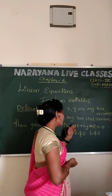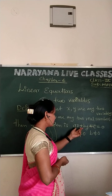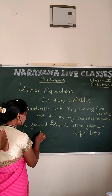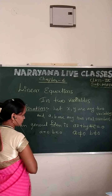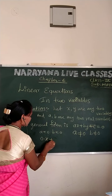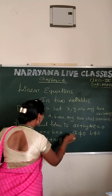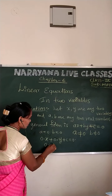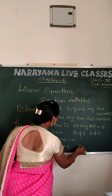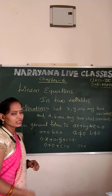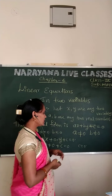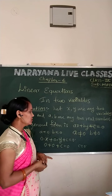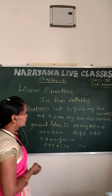Why? Because if A and B are simultaneously taken as zero, then there is no linear equation in two variables. Suppose A is equal to zero and B is equal to zero — then zero times X plus zero times Y plus C equals zero. If you multiply zero with any number the answer is zero, so zero plus zero plus C equals zero, meaning C equals zero. There is no linear equation in two variables.